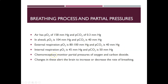Chemoreceptors are located in the arteries — around the aortic and carotid arteries — and there are also central chemoreceptors in the brain. They monitor partial pressures of oxygen and CO2 in arterial blood. The main driver of breathing is carbon dioxide. Changes in these levels alert the brain to increase or decrease the breathing rate — increased CO2 increases breathing rate, decreased CO2 decreases it.